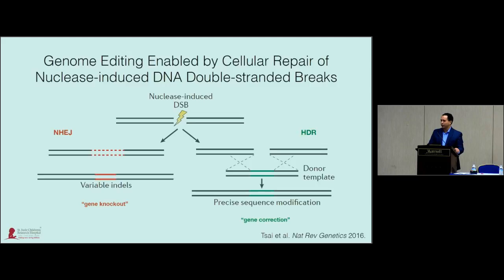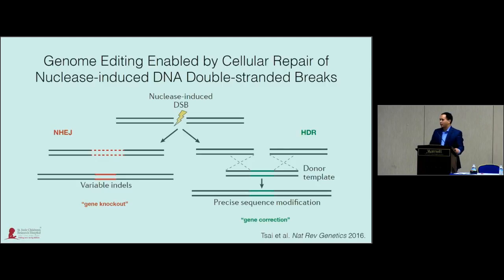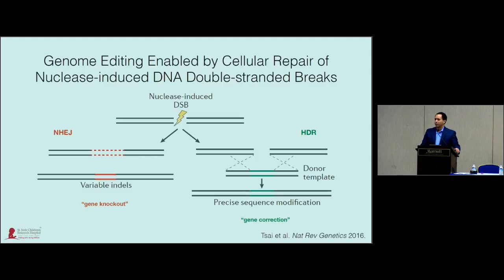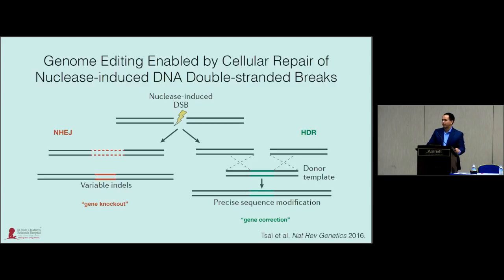Genome editing is really enabled by cellular repair for nuclease-induced double-strand breaks. These breaks are typically repaired by one of two competing DNA repair pathways: non-homologous end-joining, which is an error-prone pathway producing variable length insertions or deletions used to introduce gene knockouts, or the precise homology-directed repair pathway, where in the presence of a user-supplied donor template, you can mediate precise sequence modification for gene correction.